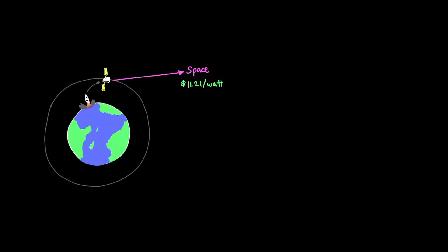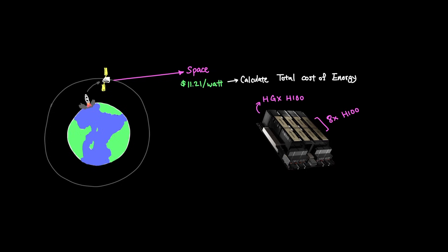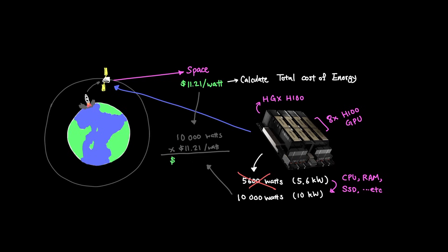So using the $11.21 per watt as a base price, let's now look at the power consumption from the graphics cards and calculate the total cost of energy. Let's say we want to launch this HGX H100 unit that has 8 H100 GPUs in a single topology right into space. The power consumption for this HGX unit is 5,600 watts or 5.6 kilowatts according to the NVIDIA spec. But realistically, they're going to be more like 10,000 watts or 10 kilowatts if you factor in other things like CPUs, RAM, solid-state drives, and other electronics. So now that we know the power consumption needs, which is 10,000 watts for the HGX unit, if we multiply it by the $11.21 per watt for a space solar panel, we arrive at the total cost of $112,100. In other words, this HGX unit that retails for about a quarter million dollars, the solar panel that's needed to power it in space is going to cost around $112,100.